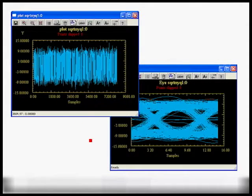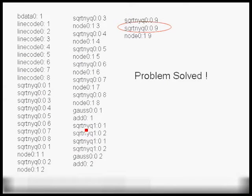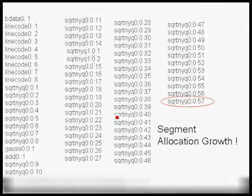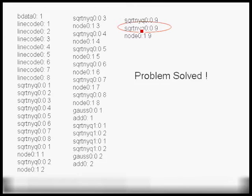Here are the simulation results with pacing: generating 9,000 samples with the eye diagram showing additive white Gaussian noise. Looking at buffer.dat, the buffers are now totally bounded — no buffer overflow — compared to the previous case where the square-root Nyquist filter buffer grew to 57 segments. With pacing, the buffer on the square-root Nyquist filter is bounded and the problem is solved.